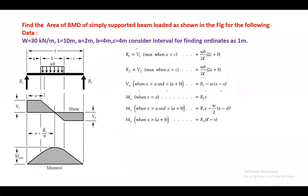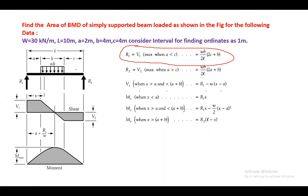We need to find R1 and R2. R1 is reaction one. By applying equations of equilibrium — Sigma Fy = 0, Sigma Fx = 0 — if you consider R1 + R2 = W × B, you will get the result. So W is the intensity of the load. R1 = WB/(2L) × (2C + B).